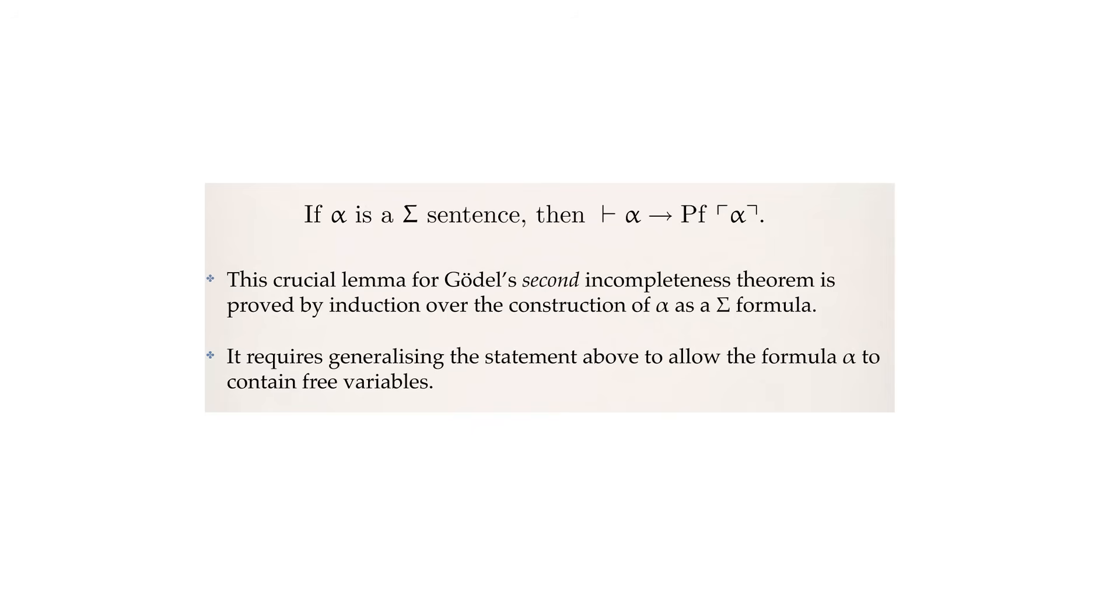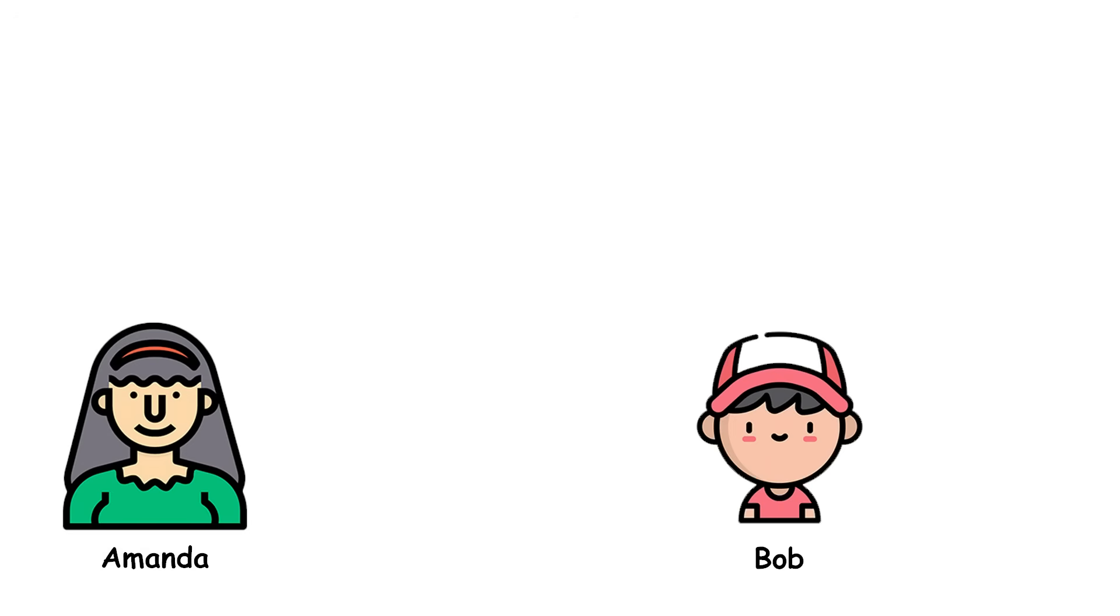Gödel's Second Incompleteness Theorem is equally mind-bending. It says that a mathematical system cannot prove its own consistency, that is, it can't show that it will never produce any logical contradictions. Imagine two people, Amanda and Bob, each with their own set of mathematical axioms. If Amanda can use her axioms to prove that Bob's system is free of contradictions, then Bob cannot use his own axioms to prove that Amanda's system is inconsistent, and this shows the inherent limitations of any formal mathematical system.